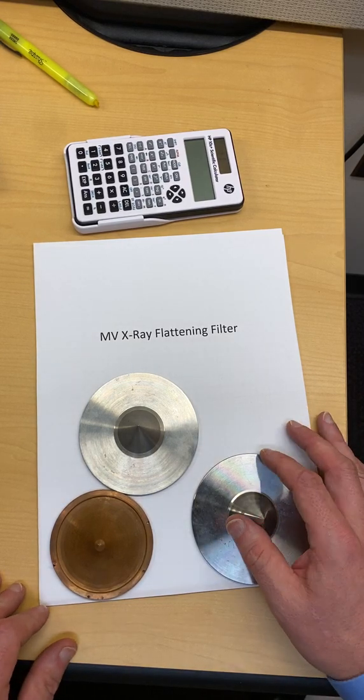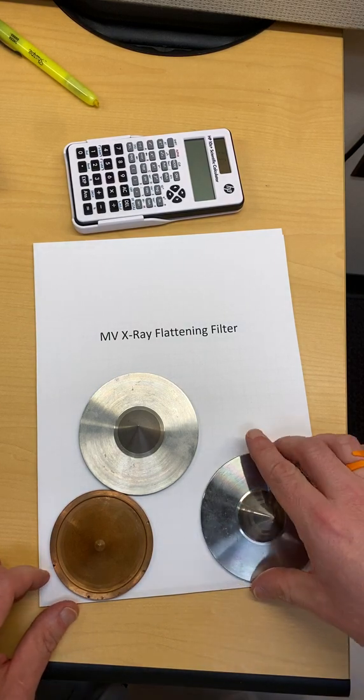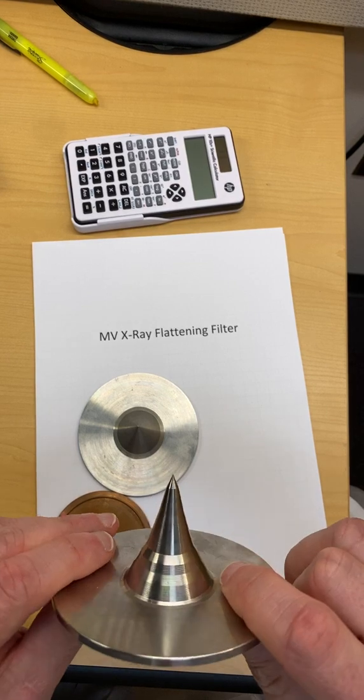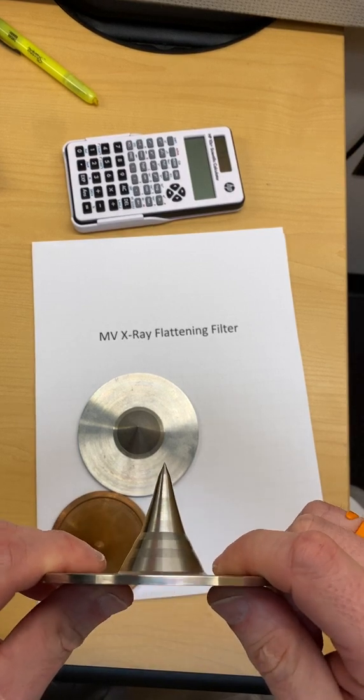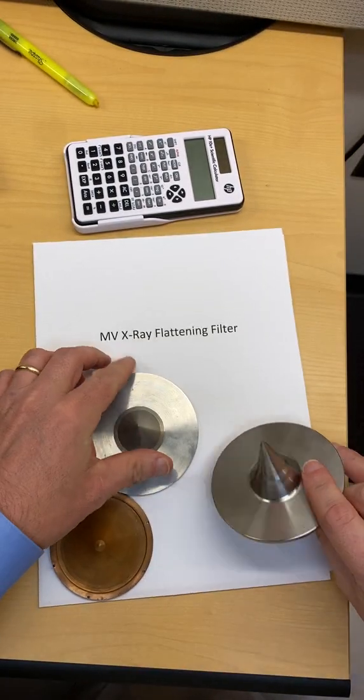Okay, so here we have some flattening filters, MV X-ray flattening filters, and this is the device that's up in the head of the machine that's designed to attenuate a non-flat X-ray beam and turn it flat. So you can see they're cone-shaped.